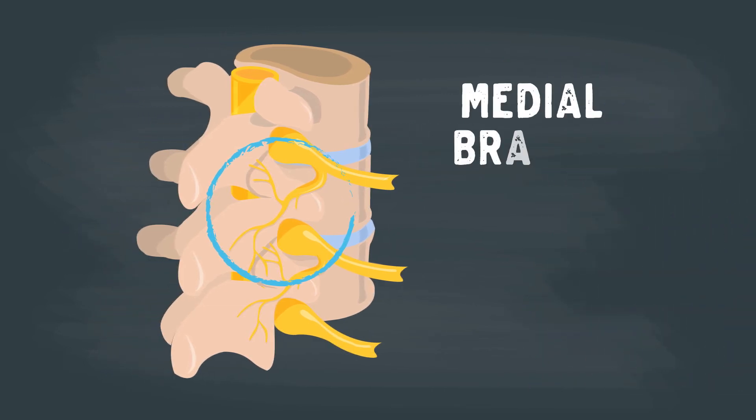These nerves are called your medial branch nerves. They run just around your facet joints.